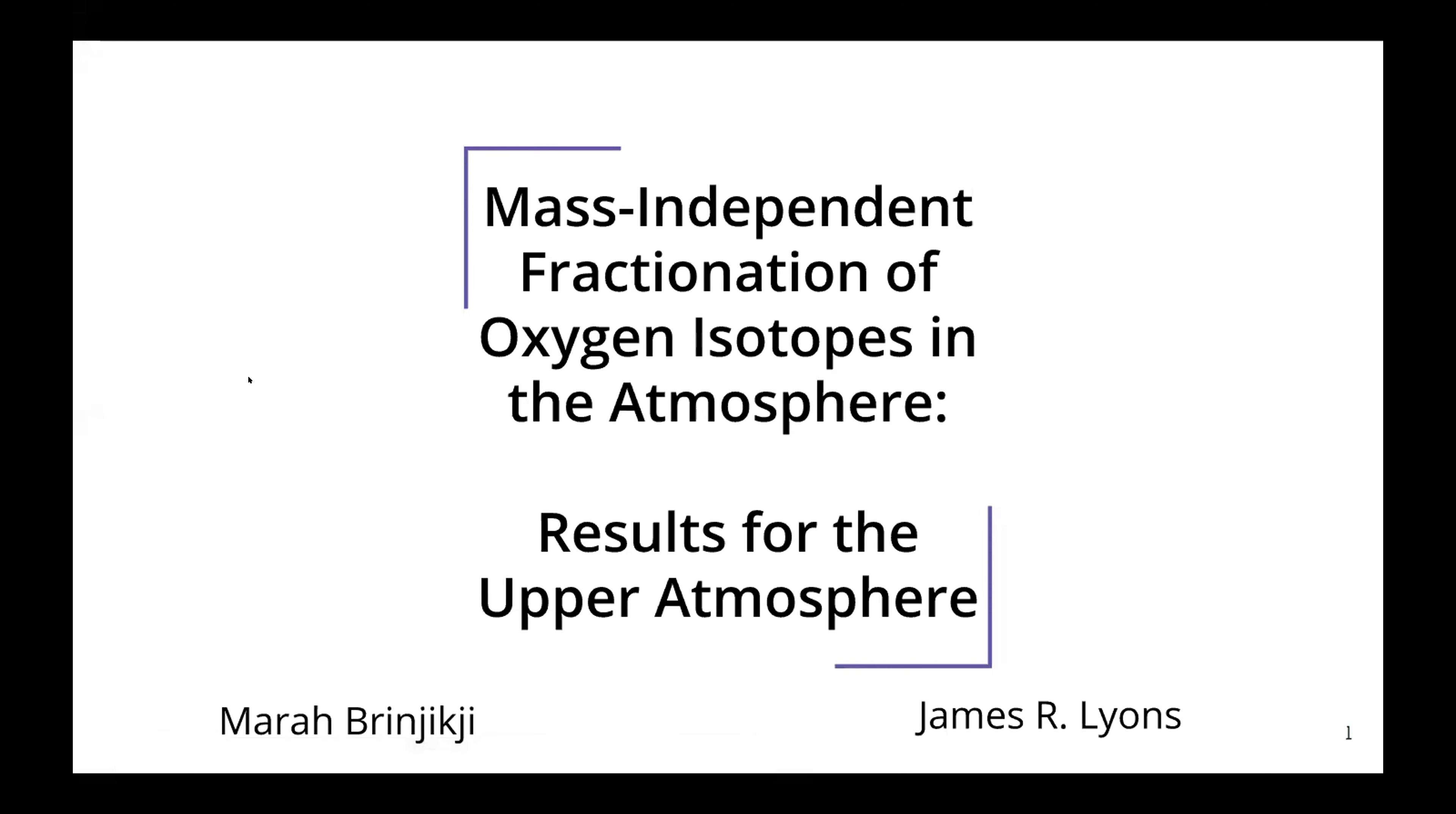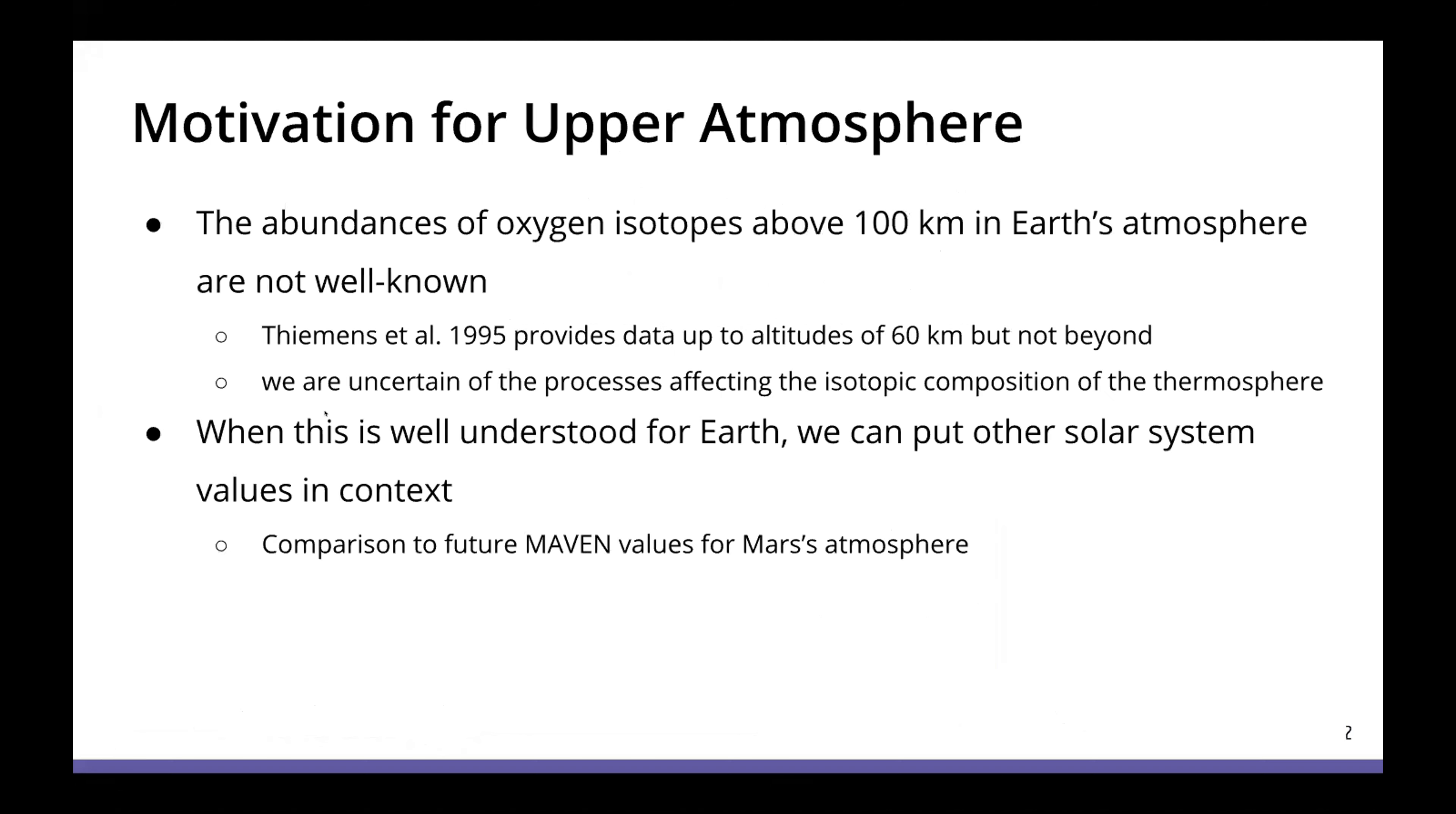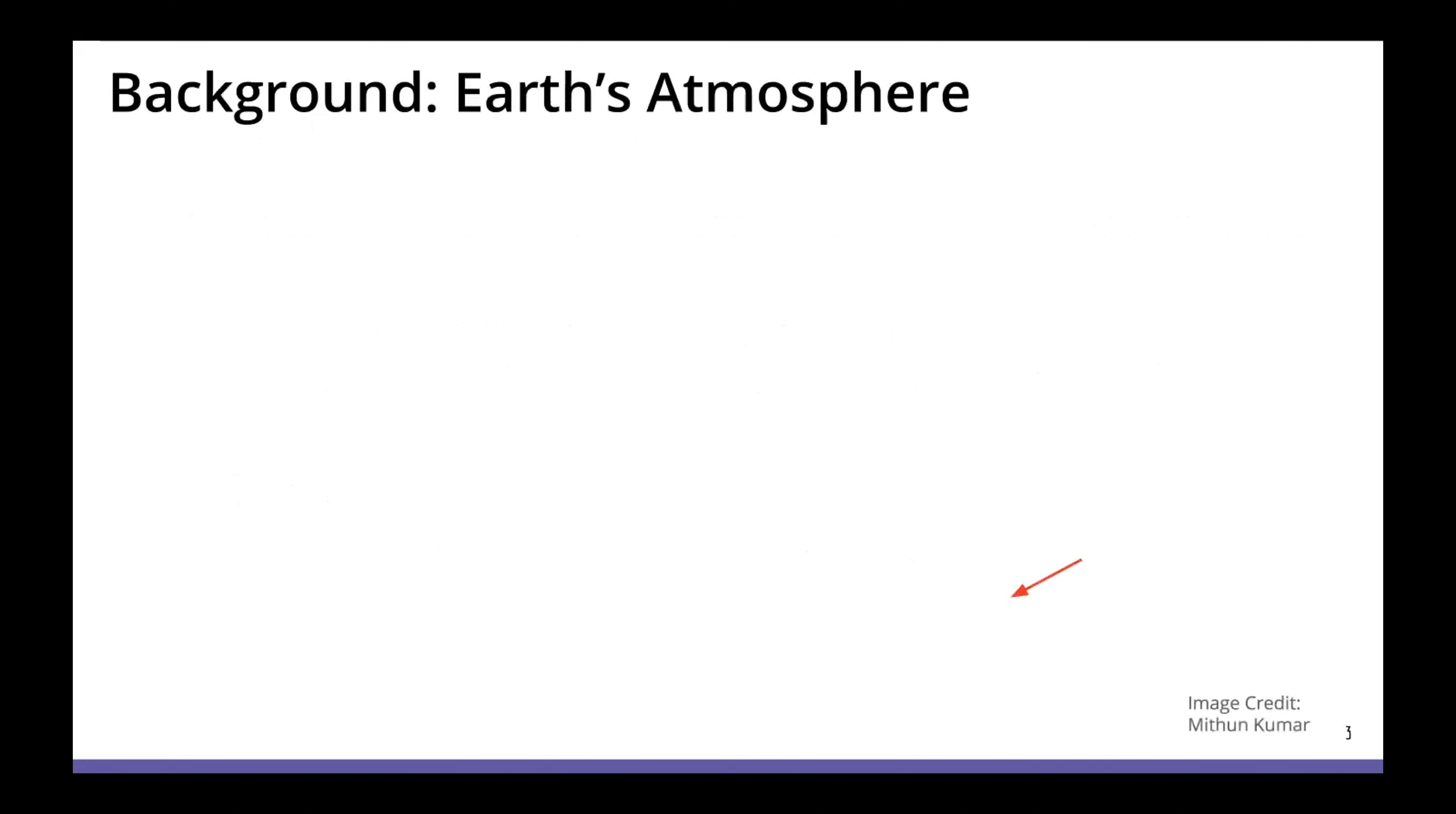Hi, everyone. I'm going to talk to you about the mass independent fractionation of oxygen isotopes in the atmosphere, specifically the upper atmosphere of earth. So our motivation for this project is really that the abundances of oxygen isotopes above a hundred kilometers in earth's atmosphere is not all known. There have been some projects going up to about 60 kilometers, but not beyond. So therefore we are uncertain of the processes affecting isotopic composition of the thermosphere. When this is well understood for earth, we can put other solar system values in context.